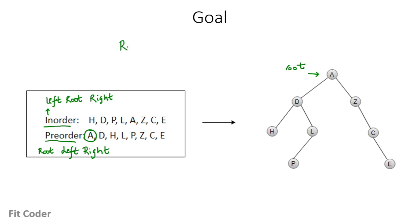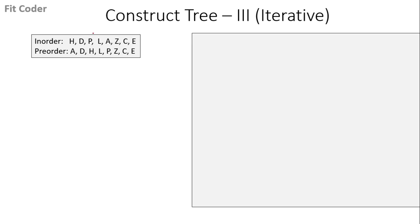The recursive approach was explained in a previous video — if you have doubts on how to create this tree from in-order and pre-order traversal using the recursive method, you can refer to that video, linked in the top right corner. Here we will see how to construct this binary tree using the iterative method. When we convert a recursive function to an iterative approach, we make use of a stack, and here we will do the same.